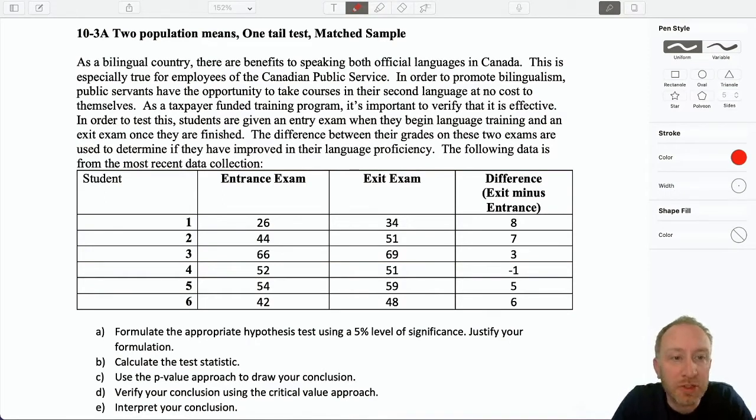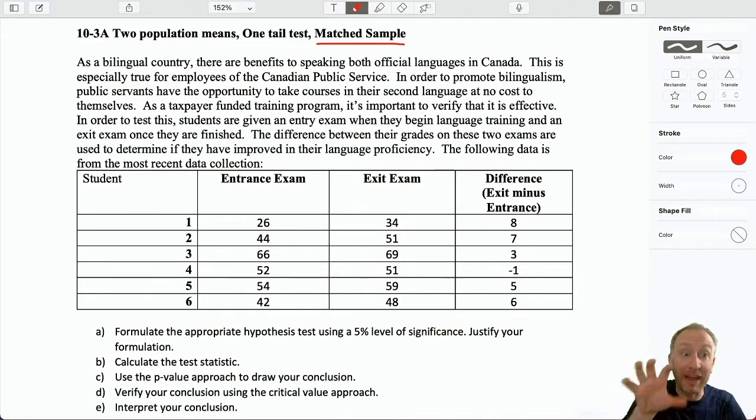Hello everybody and welcome to module 10.3. Now we're looking at a different type of experimental design. This is a little bit different only because of how the data has been collected. A matched sample is an approach to collecting data that endeavors to eliminate one source of variation in your data set. Much of the process of doing a matched sample hypothesis test is very similar to a module 9 problem where you were working with just a single population.